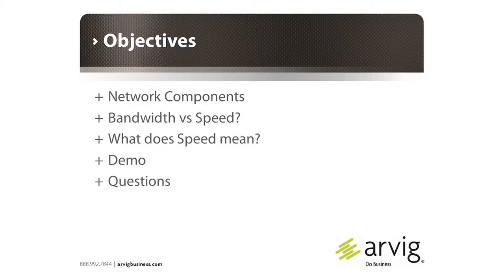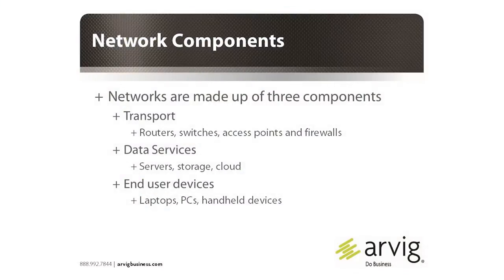Here's what we want to talk to you about today: network components — what makes up a network; making it work — what's doing the work; bandwidth versus speed, which is something people often get confused about; and what speed really means, because people keep hearing about internet speed. We'll do some demos and then open it up for questions. I broke the network components down into three sections: transport, data services, and end users.